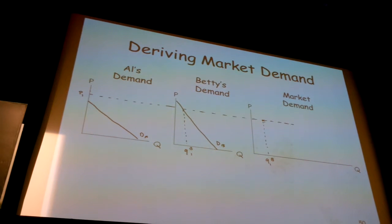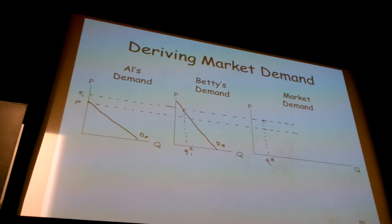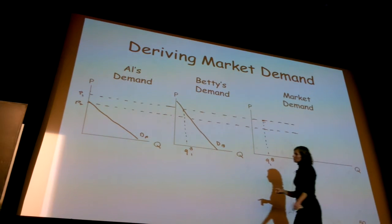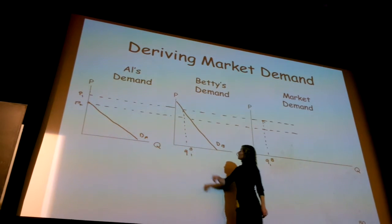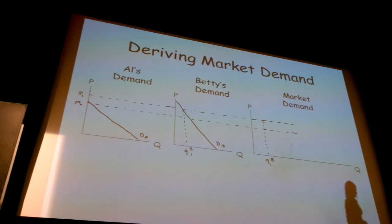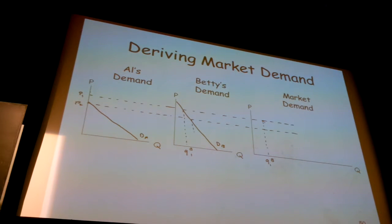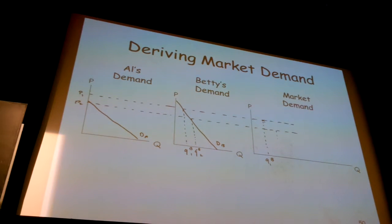Now let's suppose the price is a little bit lower — let's call it P2. I'm deliberately choosing this price to be exactly the y-intercept on Al's demand curve. So here Al is still demanding zero, and now Betty is demanding a little bit more, QB2. The market demand is also QB2.